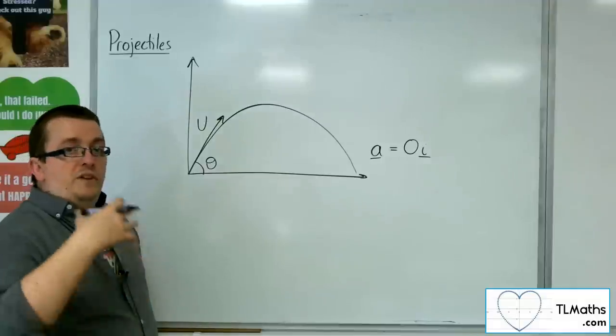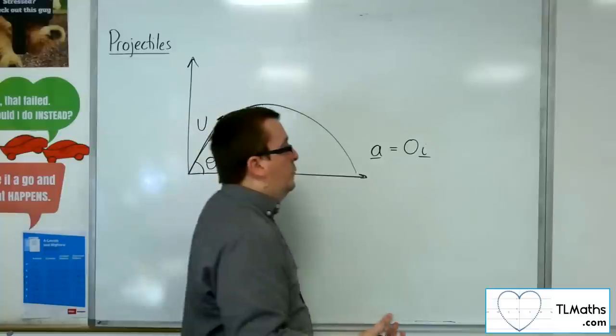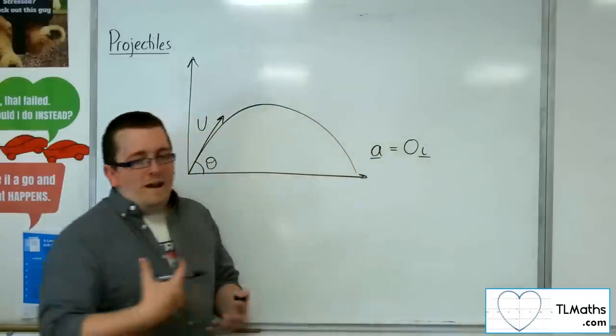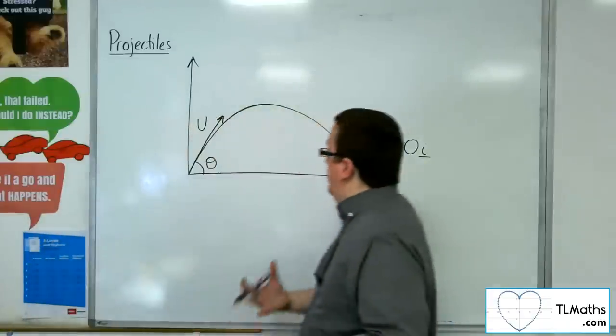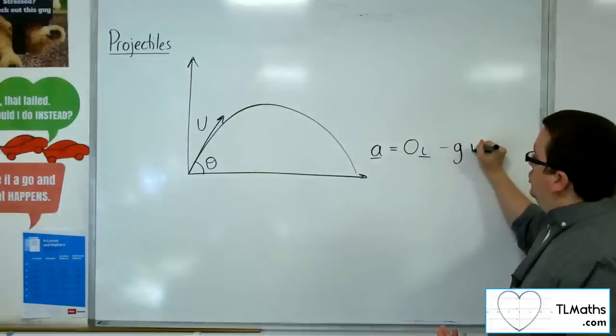Now, the j component, the vertical component, that is where gravity is working. So if we take gravity as g for the time being, then I'm going to have minus g j.